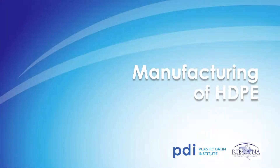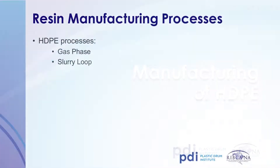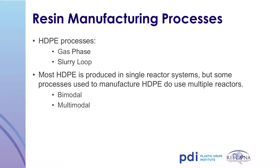Next, we'll discuss the manufacturing of polyethylene resin. Two of the most common processes used are gas phase and slurry loop. The majority of high-density polyethylene is made using a single reactor system; however, there are other processes called bimodal or multimodal processes which employ multiple reactors. Today we are going to focus on gas phase and slurry loop processes.